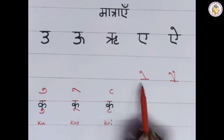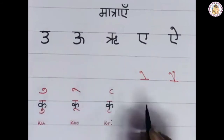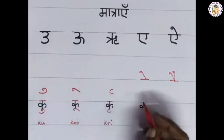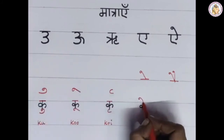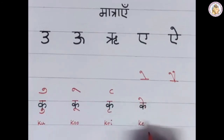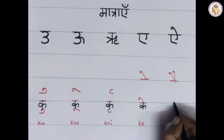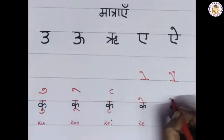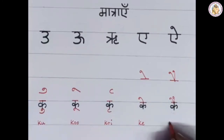Next one is the 'ae' Matra. First write the vyanjan K. On the top of the vyanjan, draw one slanting line by touching the top of the vyanjan. This gives 'Kae'. Next one is the 'ai' Matra. First write the vyanjan. Draw two slanting lines on the top of the vyanjan. This gives 'Kai'.